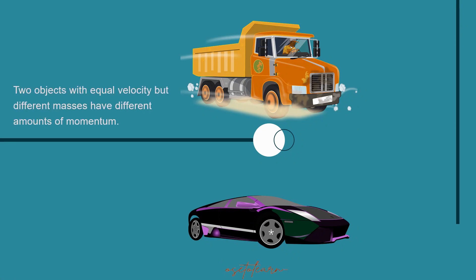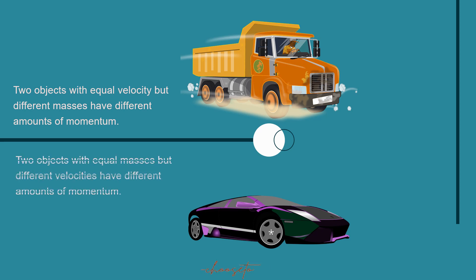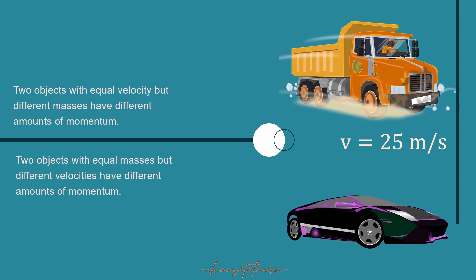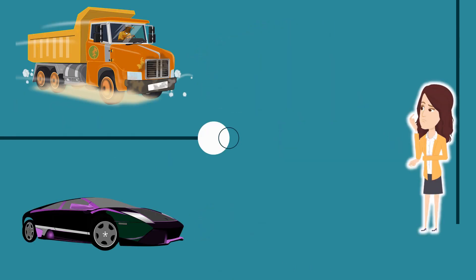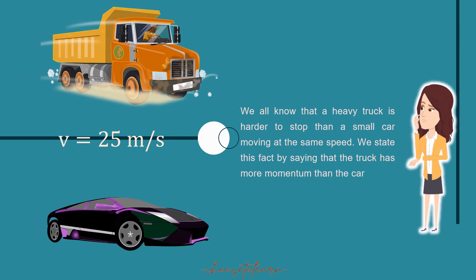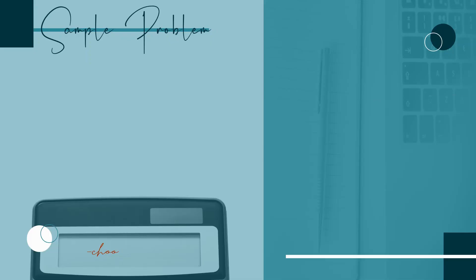Two objects with equal velocities but different masses have different amounts of momentum. For example, despite having equal velocity of 25 meters per second, a heavy truck is harder to stop than a small car moving at the same speed. We state this fact by saying that the truck has more momentum than the car.